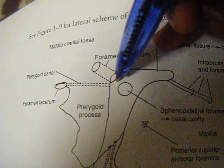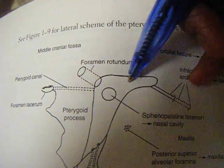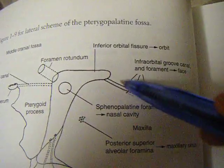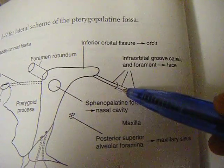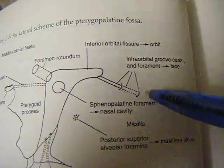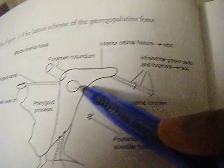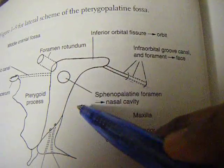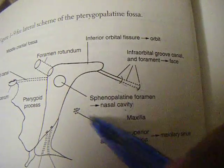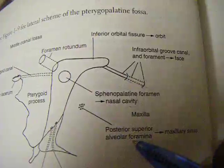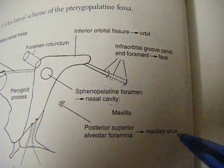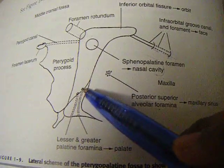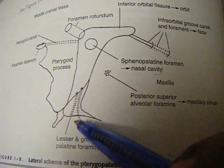Through the foramen rotundum passes the maxillary division of the trigeminal nerve, which then passes through the inferior orbital fissure, through the groove and the inferior orbital canal, and opens into the face. The sphenopalatine foramen transmits the nasopalatine nerve and the sphenopalatine artery, which exits to the nasal cavity. The posterior superior alveolar foramen exits into the maxillary sinus. The greater and lesser palatine foramina lead into the palate.